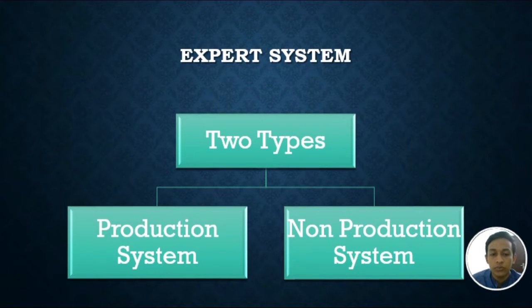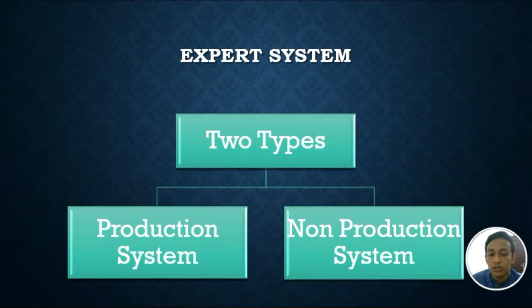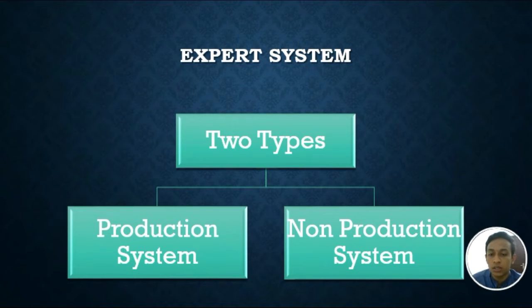Non-production systems, instead of rules, employ more structured representation schemes like semantic or associative networks, frames, tree structures, or even neural networks. Some of the non-production system architectures are associative or semantic architecture, frame and rule structure, decision networks, blackboard system architecture, neural networks, and logical reasoning. Now we are going to learn about the blackboard architecture.